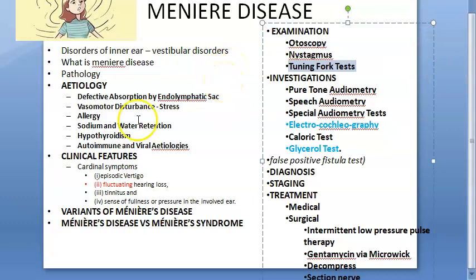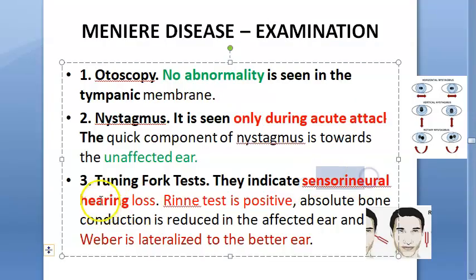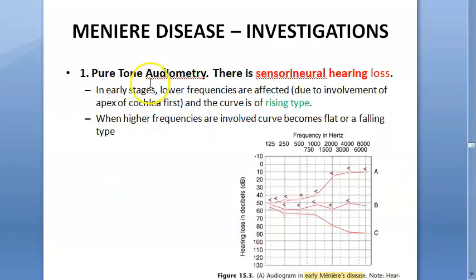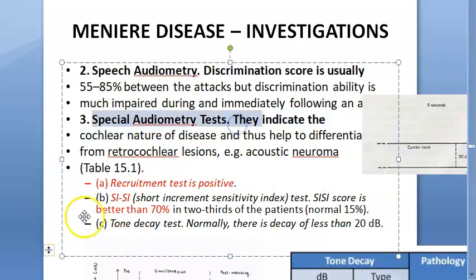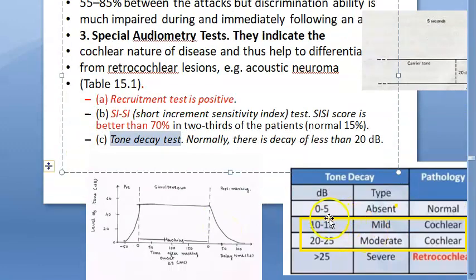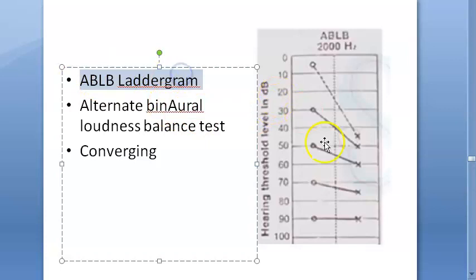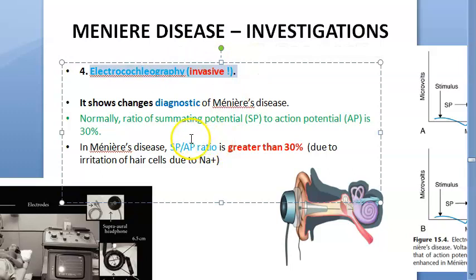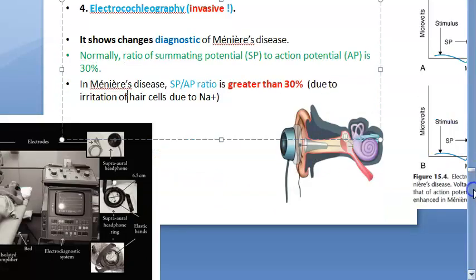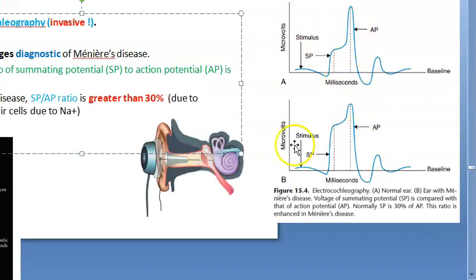On recap: Rinne's is positive and Weber's lateralizes to the better ear. Pure tone audiometry shows a rising curve early and falling curve late. Special audiometric tests show positive recruitment, SISI better than 70%, tone decay present, and the ABLB laddergramme shows a converging pattern. Electrocochleography is invasive and shows SP/AP greater than 30% due to sodium irritation of hair cells.